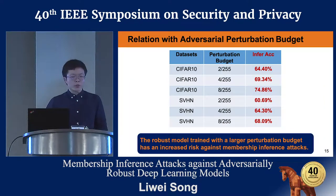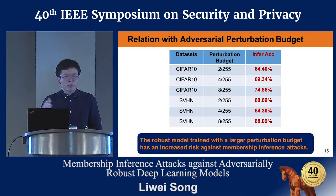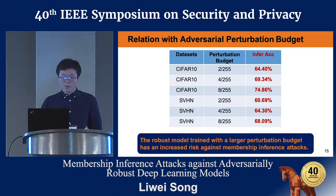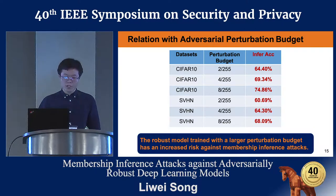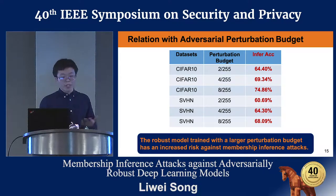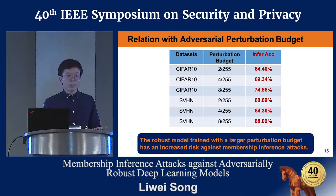We also trained robust classifiers with different adversarial perturbation constraints, using the same dataset and model architecture. The results show that if you train a robust model with a larger perturbation constraint, you lose more privacy.